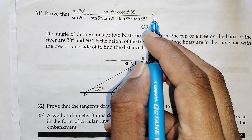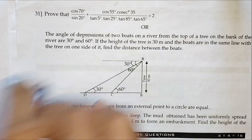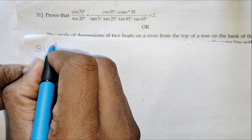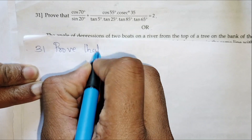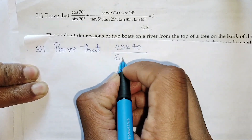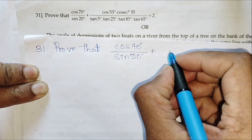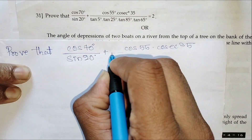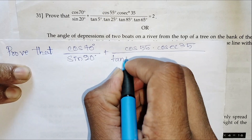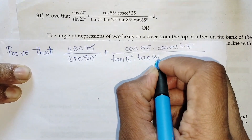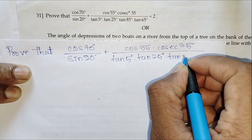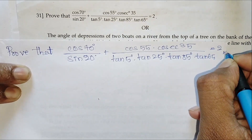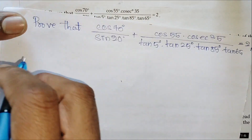Here we have to prove that the whole sum equals the number 2. It involves division of cos and sin functions. So let us write the problem statement first: cos 70 divided by sin 20 degree, plus cos 55 into cosec 35, divided by tan 5 degree into tan 25 degree into tan 85 degree into tan 65 degree, whole equals 2. It is the problem and we have to take LHS.